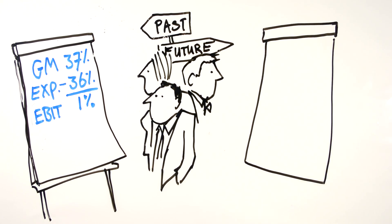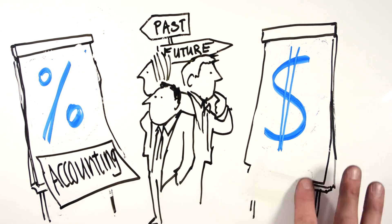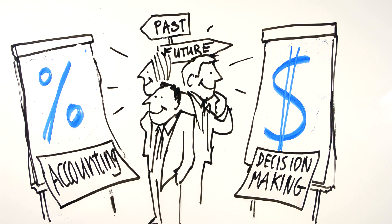Present planning and decision-making going forward should be based on dekkungsbeitrag and opportunity costs. Not understanding this trick can be fatal.